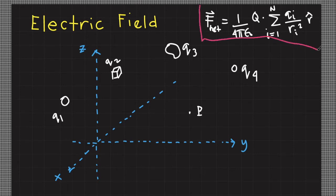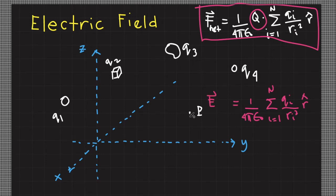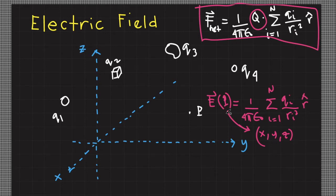Going back to Coulomb's law — if we remove the test charge Q from the equation, we end up with 1 over 4 pi epsilon naught times the summation of the individual contributions of the point source charges divided by their distances from point P squared. Instead of calling this a force — and notice it wouldn't have units of force — we can name this the electric field, symbolized by capital E, measured at a specific position P, which refers to x, y, z coordinates. This is our definition of electric field derived from Coulomb's law.